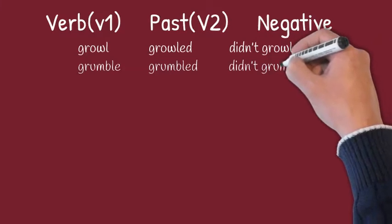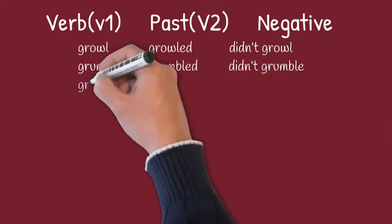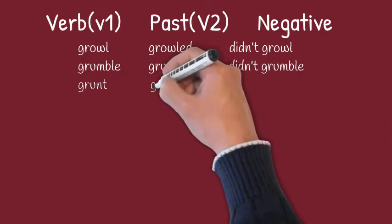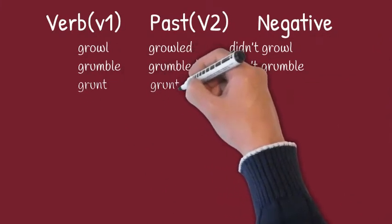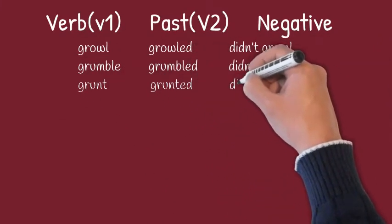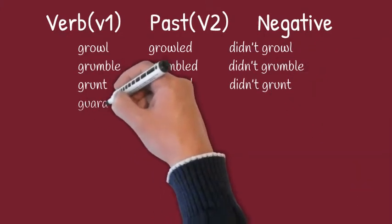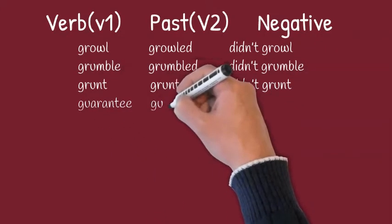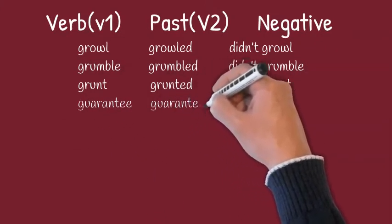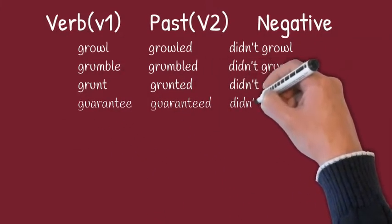Grumble, grumbled, didn't grumble. Grant, granted, didn't grant. Guarantee, guaranteed, didn't guarantee.